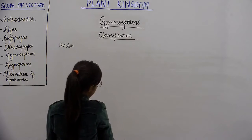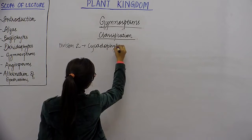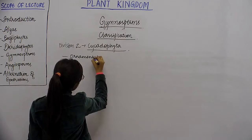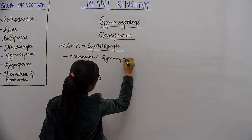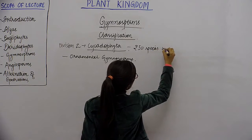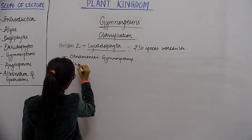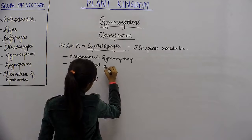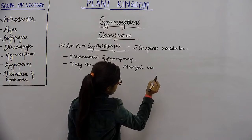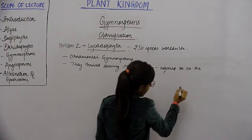Division 2 is Cycadophyta. These are ornamental Gymnosperms. They have about 250 species all over the world. They thrived during the Mesozoic era, which is referred to as the Age of Cycads.